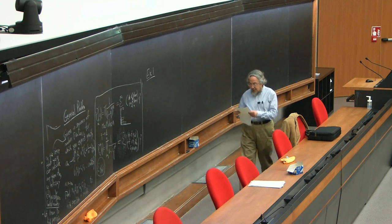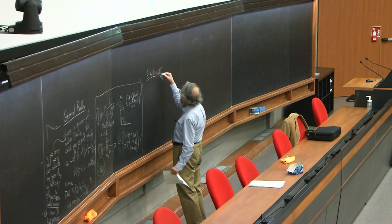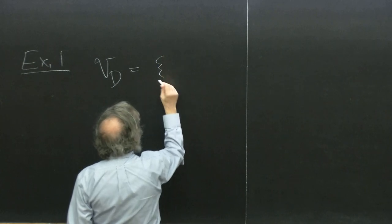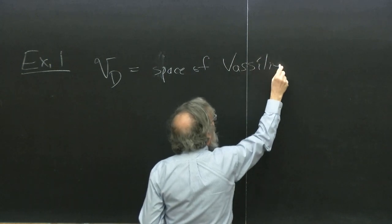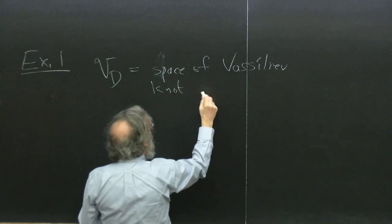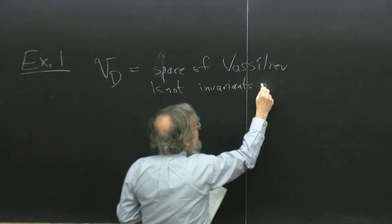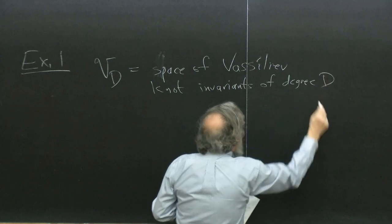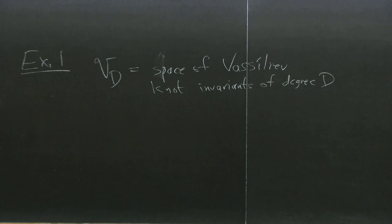Example one. Let V_D be the vector space of Vassiliev knot invariants of degree D. D is some integer — zero, one, two, three, and so on. Now if you don't know what a Vassiliev knot invariant is — just to put my conscience at rest, I'll tell you very briefly, it's completely irrelevant. There are just some numbers, and we're going to bound them in terms of some other numbers that somebody else proved — Stoymanov — and those other numbers I will define. This is just the motivation.